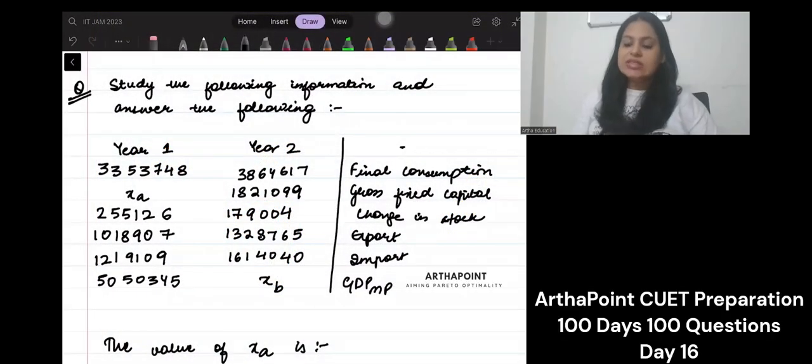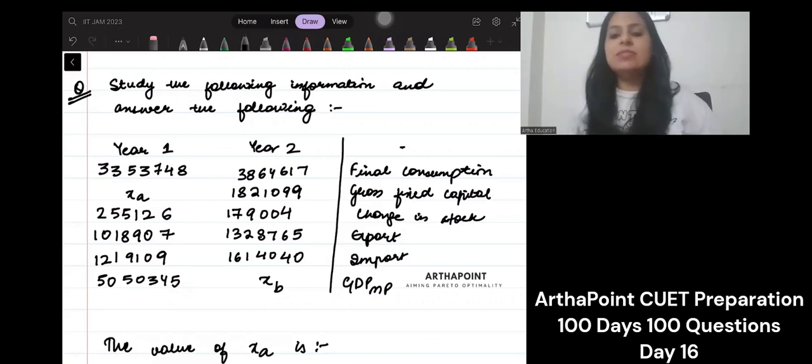Okay, let us have a look at this question. Study the following information and answer the following. Actually, this is not very difficult. But sometimes the way that they give you the table, it might seem like this is such a difficult question. What have they made? They've given two years. How will I solve it? It's not the case.